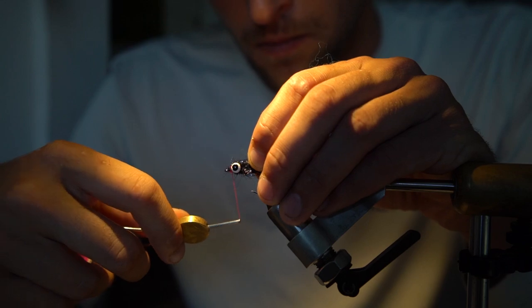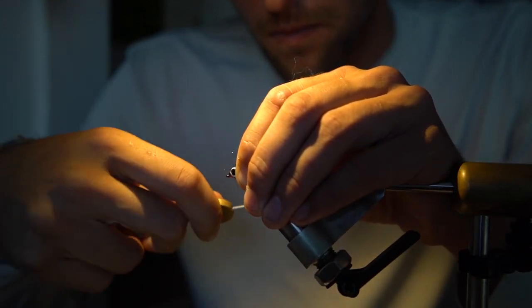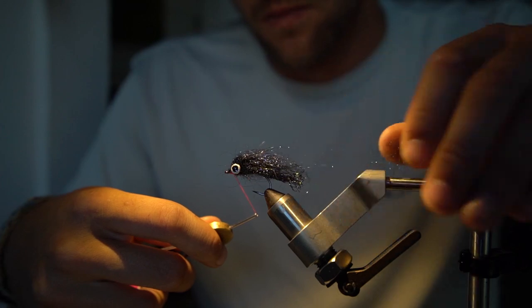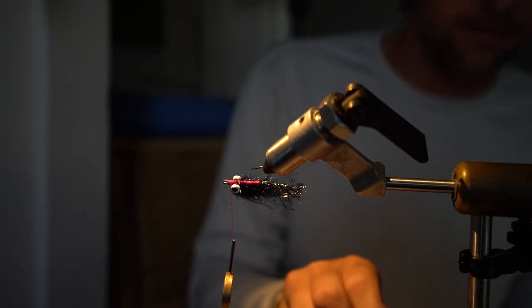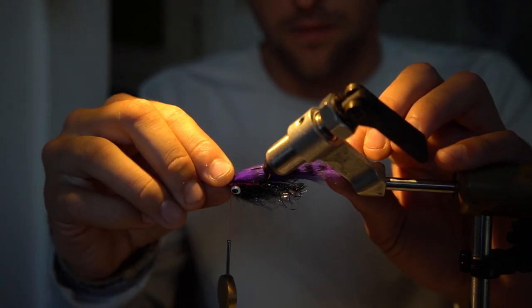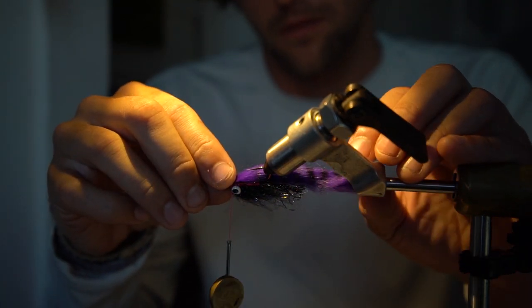Because the material is synthetic I want to make sure that my last couple of wraps are really tight and that'll help prevent them from slipping out of the thread wraps and it will give me a stronger base to tie my final material on which is a rabbit zonker in the standard cut.